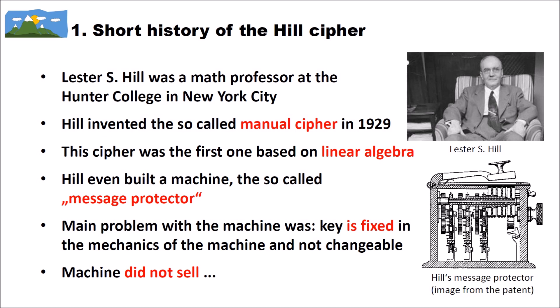The main problem with Hill's machine was that the key is fixed in the mechanics of the machine and is therefore not changeable. Based on that, the machine did not sell very well. On the right side you can see a picture of Lester S. Hill, taken from Wikipedia, and a picture of Hill's message protector taken from the original patent.